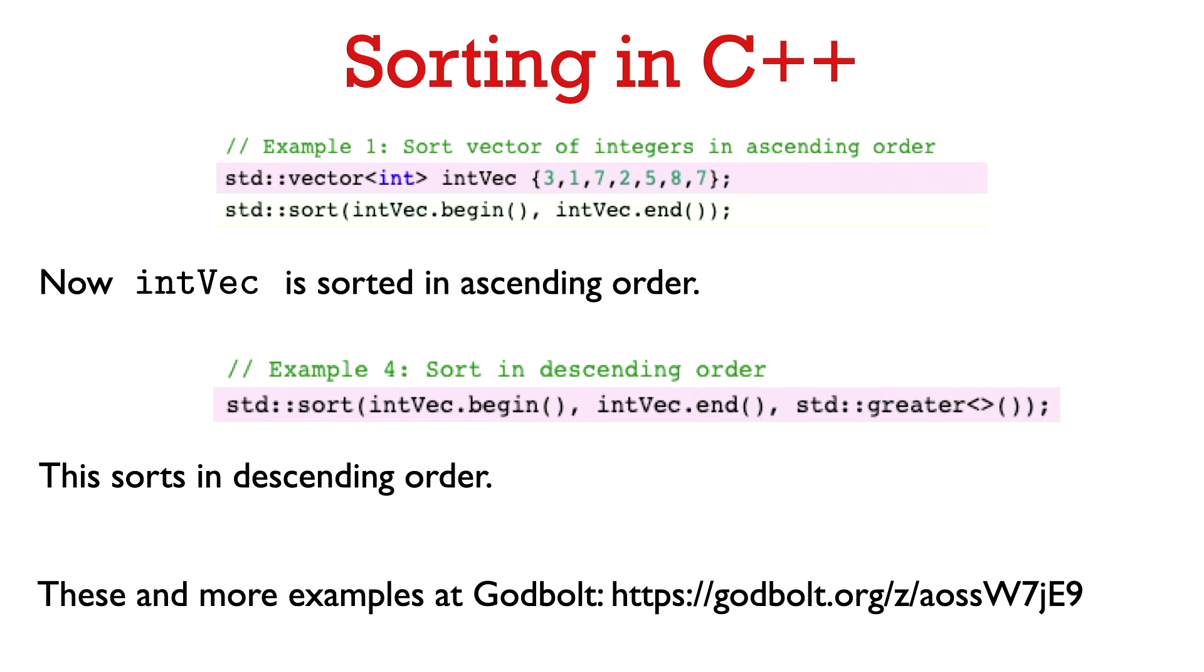If I did want to sort it in descending order, then I would have to pass a comparison function. So in this case, we can just tell the sort function to use the greater than function to do the sorting rather than the less than function.